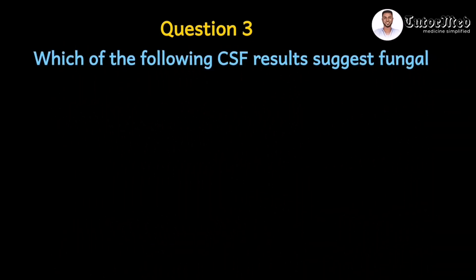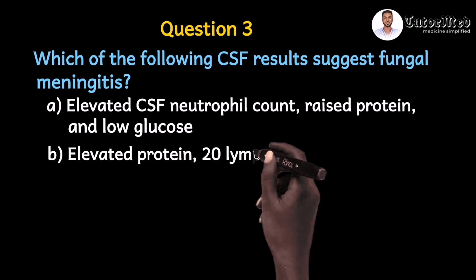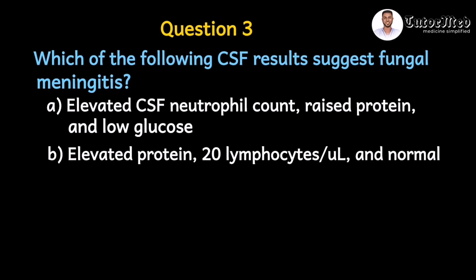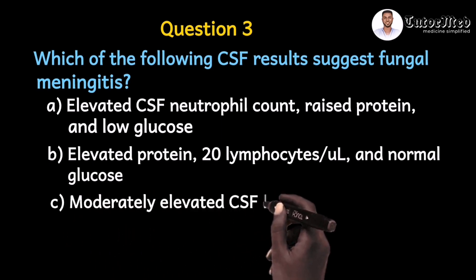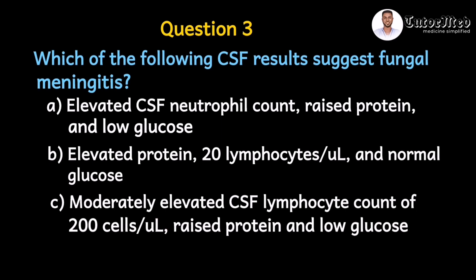Question three says: which of the following CSF results suggests fungal meningitis? A: elevated CSF neutrophil count, raised protein, and low glucose. B: elevated protein and a CSF lymphocyte count of 20 per microliter with normal glucose. C: moderately elevated CSF lymphocyte count of 200 cells per microliter, raised protein, and low glucose. If your answer is C, that is correct.